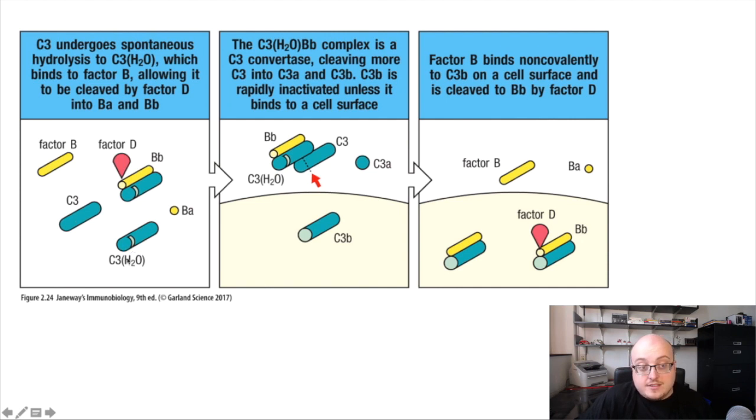When C3 hydrolyzes into C3H2O, and again, this is happening spontaneously, nothing external is causing this to happen, it can also bind factor B, which can then be degraded by factor D into Bb and Ba, and this forms a molecule called C3H2OBb. So remember that the C3 convertase of the alternative pathway that we saw before was C3BBb. This is C3H2OBb, which is also a C3 convertase in the alternative pathway, so either of them works.